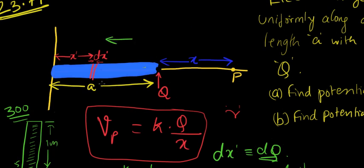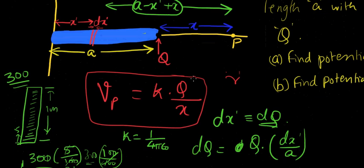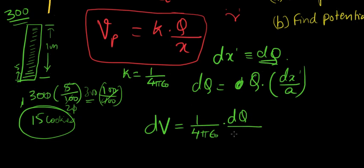Here we're going to have dQ over the distance. What is the distance of this little slice from P? This entire rod is a and the slice is about x prime away from the reference axis. So this distance is a minus x prime. What about this part? It's just x. So plus x is the total distance, x plus a minus x prime.